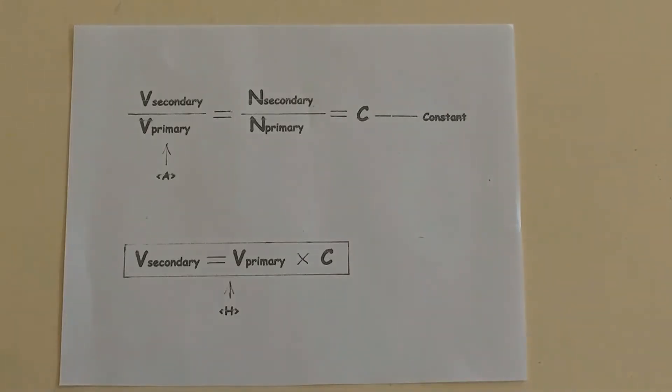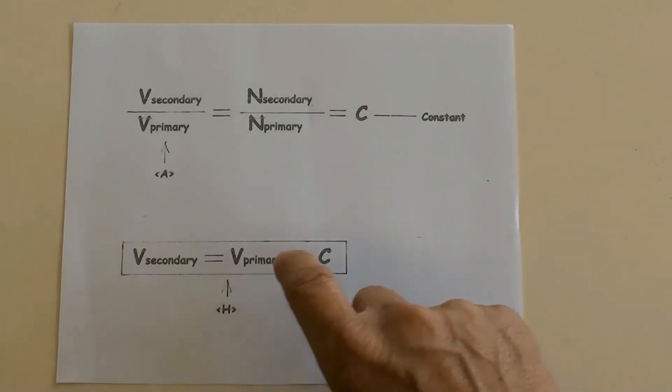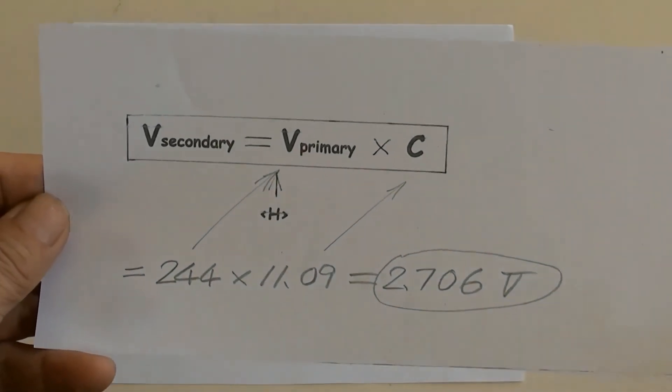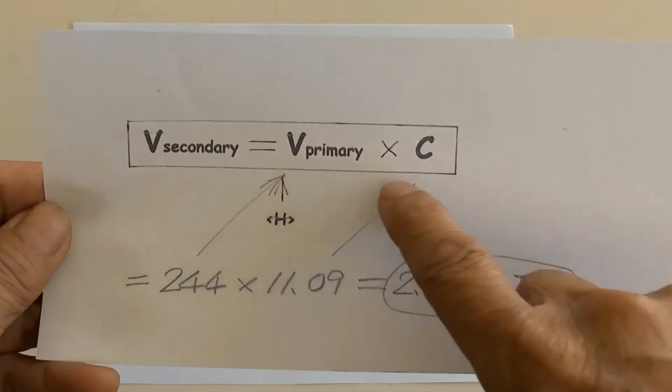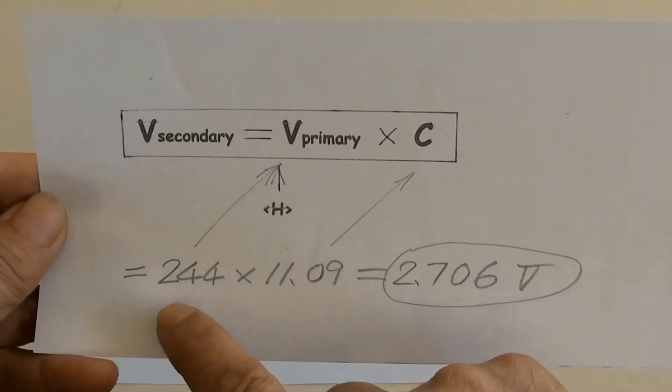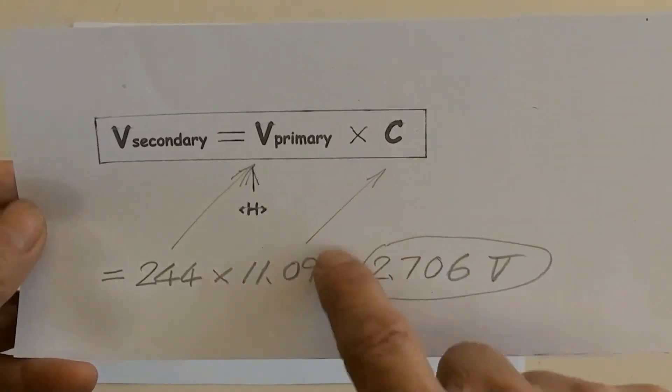Finally, using the formula V secondary equals V primary times C to calculate the result. So V secondary equals 244 volts times 11.09 equals 2706 volts.